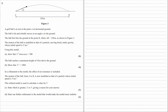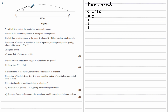We're going to split this into the horizontal and vertical motion. For the horizontal, we use SUVAT. Horizontally, the ball has travelled 120 metres. Its initial velocity is u cos alpha, and its final velocity is also u cos alpha because there is no acceleration horizontally, and we don't know the time.